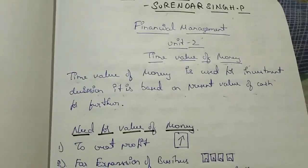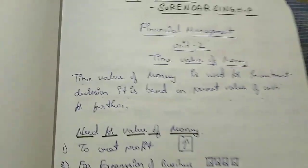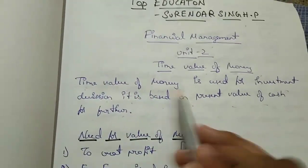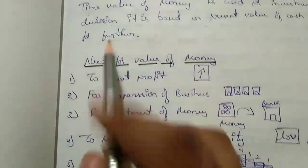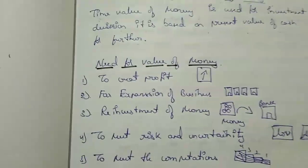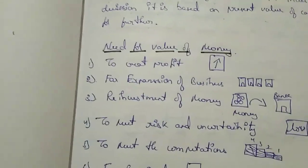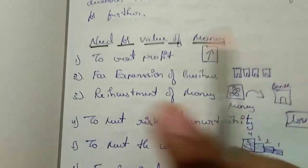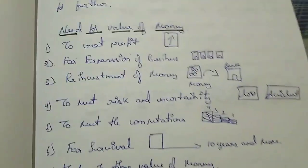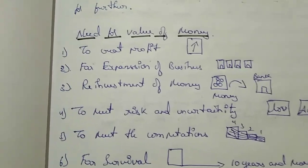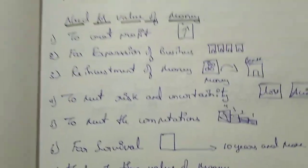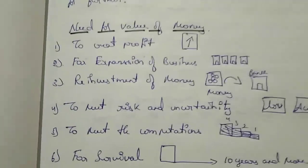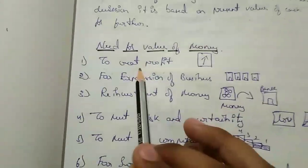Need for time value of money - what are the needs and why we have to learn this? To create profit. If you want to invest, for example you are investing in some loans, so there you are getting interest also, so it creates profit indirectly.